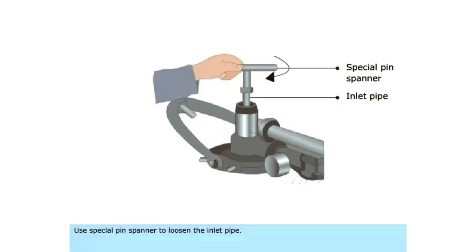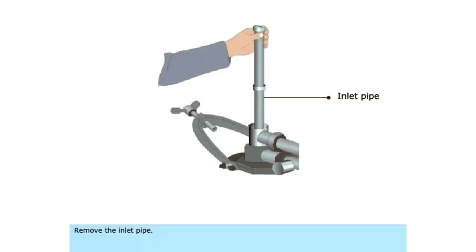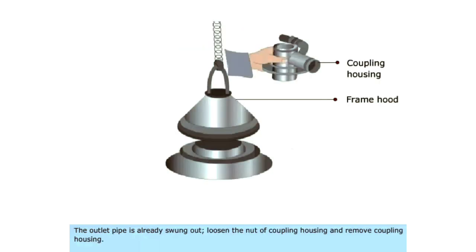Use special pin spanner to loosen the inlet pipe. Remove the inlet pipe. The outlet pipe is already swung out. Loosen the nut of coupling housing and remove coupling housing.